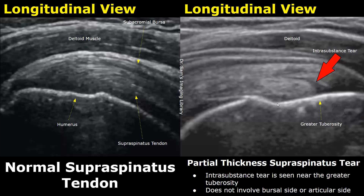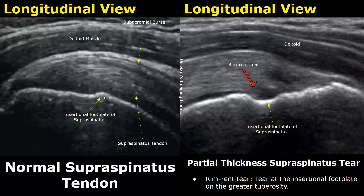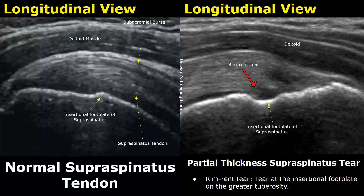This is an intrasubstance tear. It occurs near the greater tuberosity of the humerus and does not involve the bursal side nor the articular side of the supraspinatus tendon. This small bulging area on the greater tuberosity is called the insertional footplate of supraspinatus, where the tendon attaches. Any tear seen at this location is called a rim-rent tear, and it is also a type of partial thickness tear.